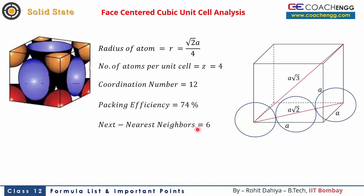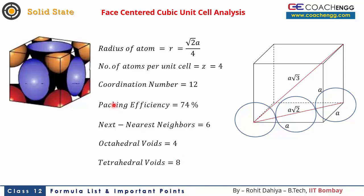The next nearest neighbors in FCC are 6. In FCC analysis, 4 octahedral voids and 8 tetrahedral voids are created per unit cell. The number of octahedral voids equals the number of atoms, and tetrahedral voids are double that. When many face-centered cubes are arranged in a line, that packing is called cubic close packing (CCP), with an ABC ABC layer pattern — meaning the first, second, and third layers are all different, and the fourth repeats the first.